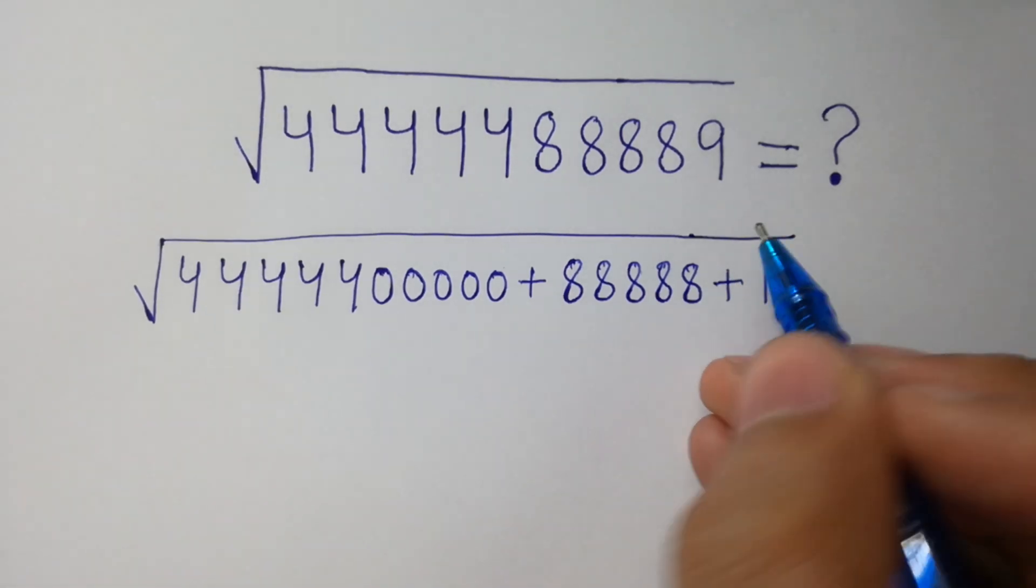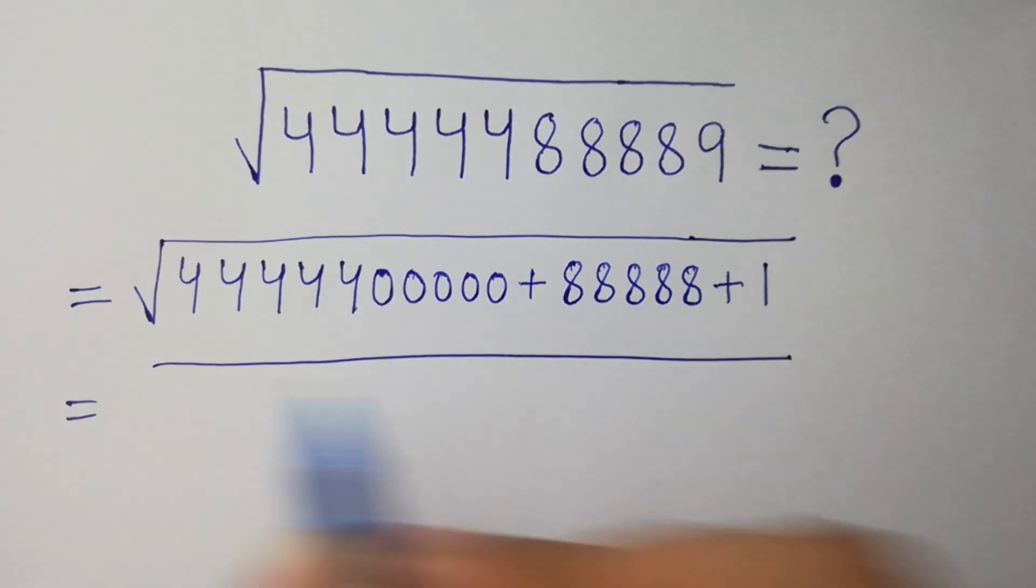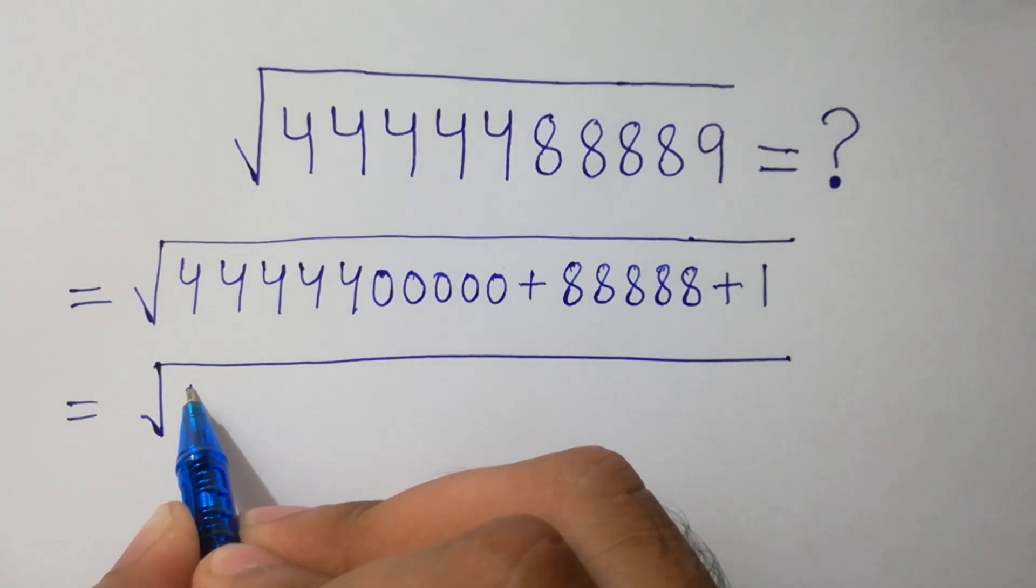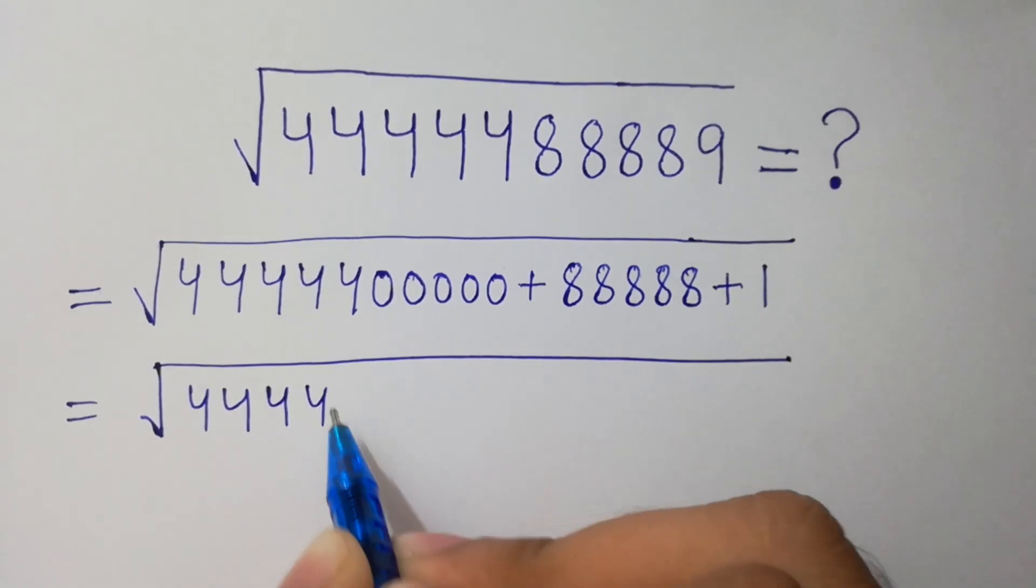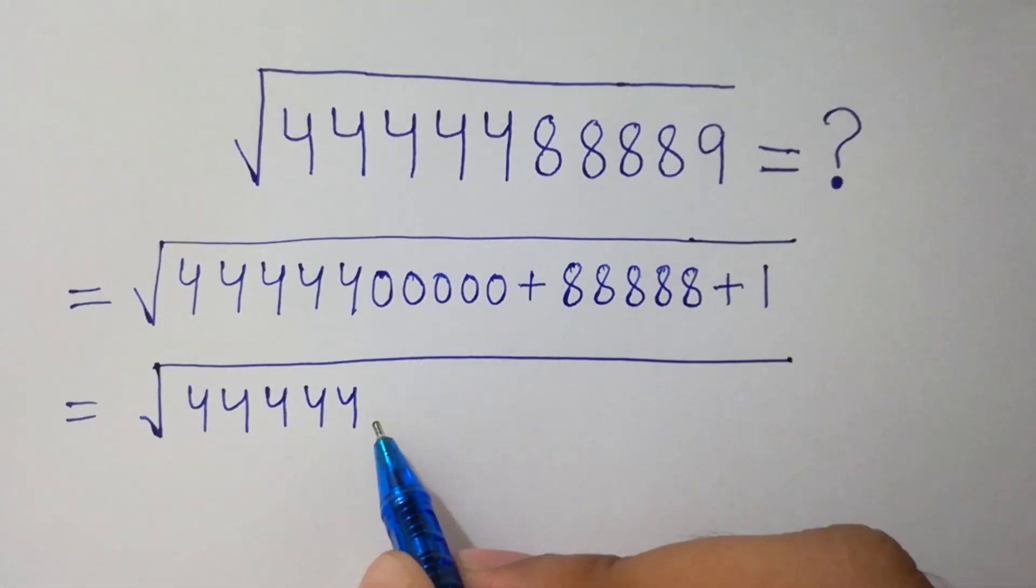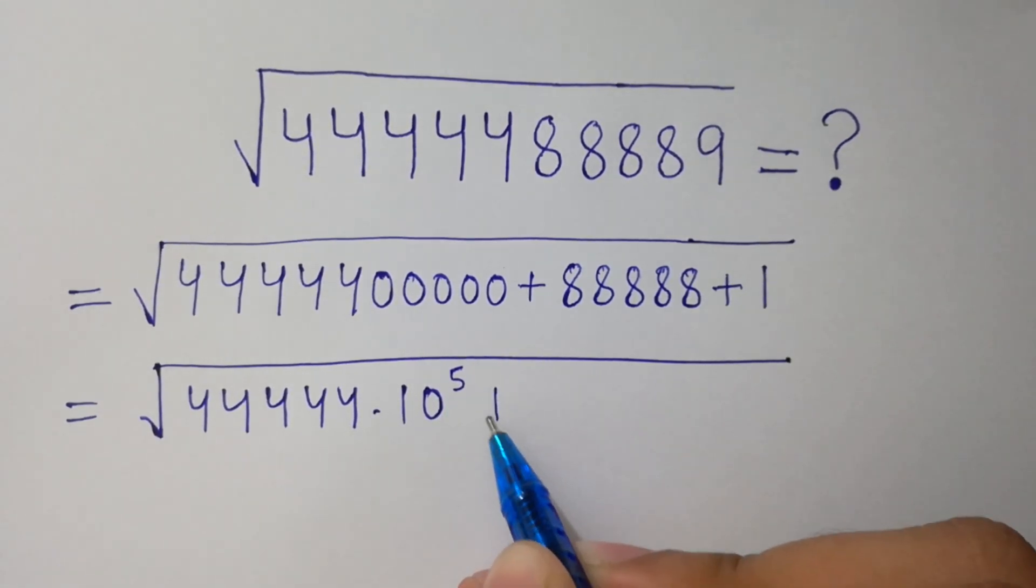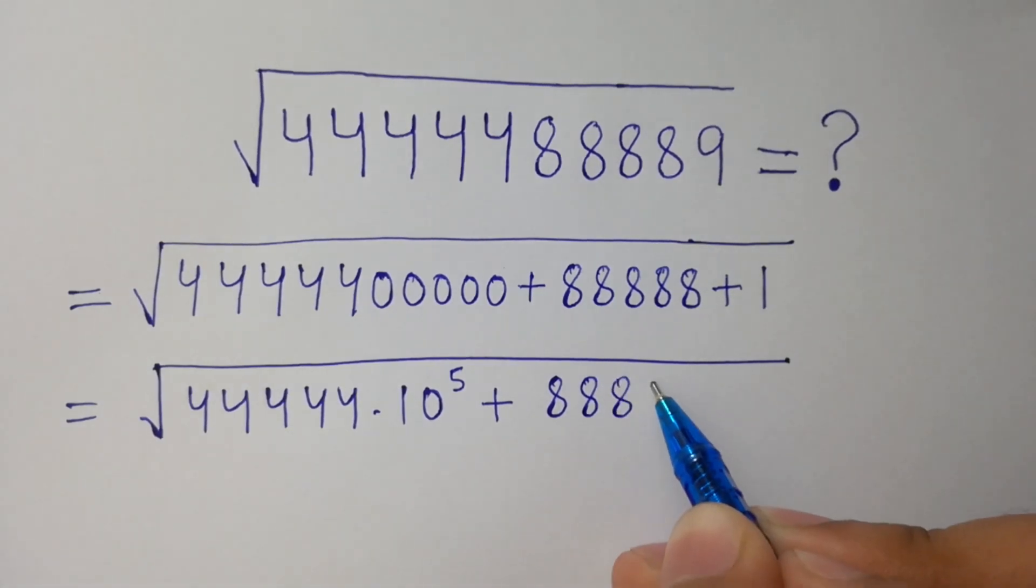Plus, 4 times 89 can be written as 5 times 8, one two three four five, plus 1. Next step, square root of 5 times one two three four five, and 5 times 0 can be written as 10 to the power 5, plus 5 times 8 as it is, one two three four five, plus 1.